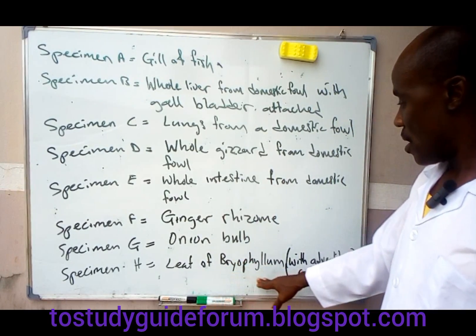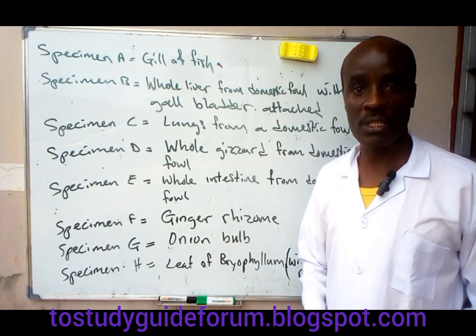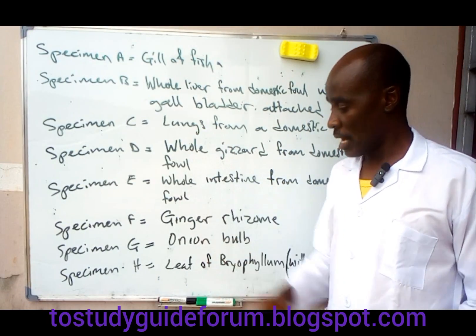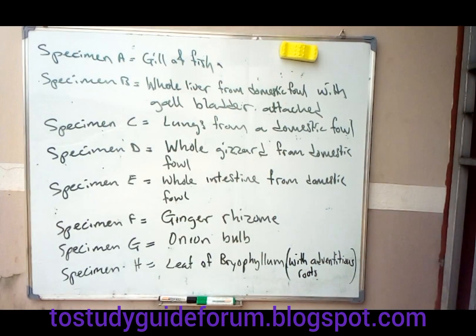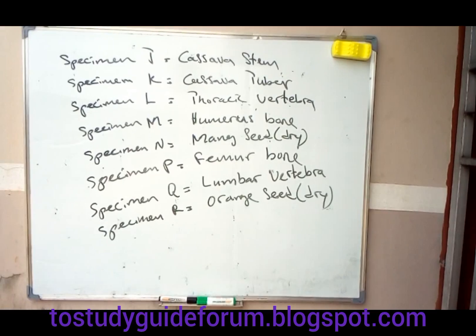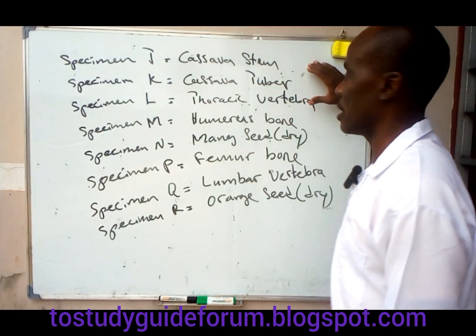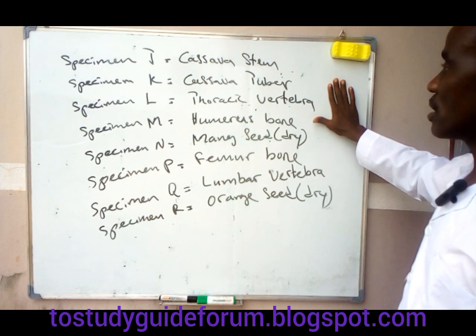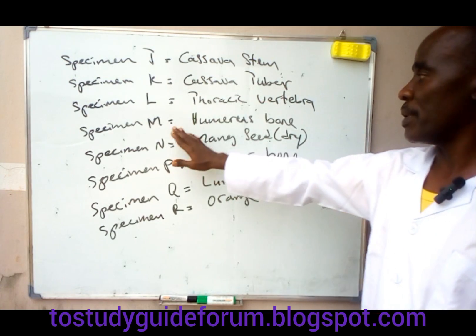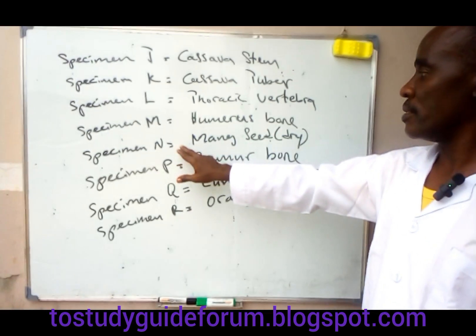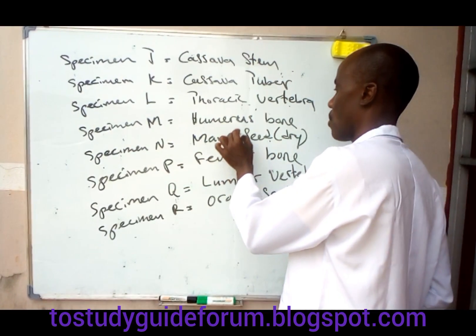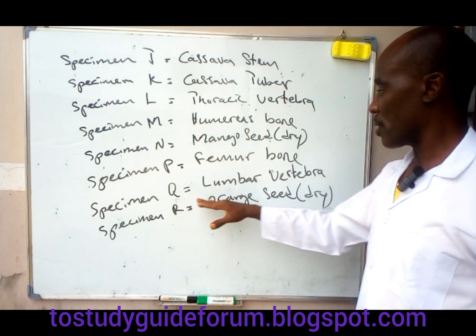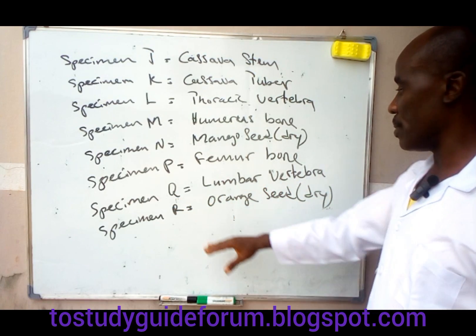While ginger, the Bryophyllum, and the onion bulb are all under what we call asexual reproduction. The other specimens include: Specimen J — cassava stem; Specimen K — cassava tuber; Specimen L — a thoracic vertebra; Specimen M — humerus bone; Specimen N — mango seed dry; Specimen P — femur bone; Specimen Q — lumbar vertebra; and Specimen R — orange seed.